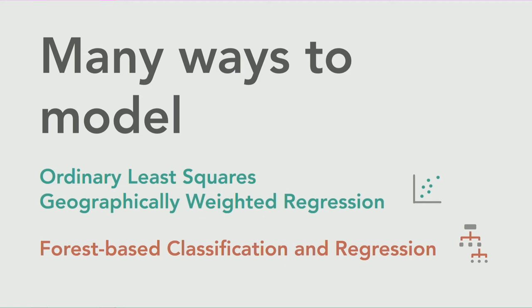We called it forest-based classification and regression instead of random forest. It is the random forest algorithm — an open algorithm that lots of software has. We validated against many different software packages and the core algorithm is the same as what you run in R or scikit-learn. We didn't call it random forest because there is a trademark on the term. So it's called forest-based classification and regression, based on the underlying algorithm originally worked on by Leo Breiman.